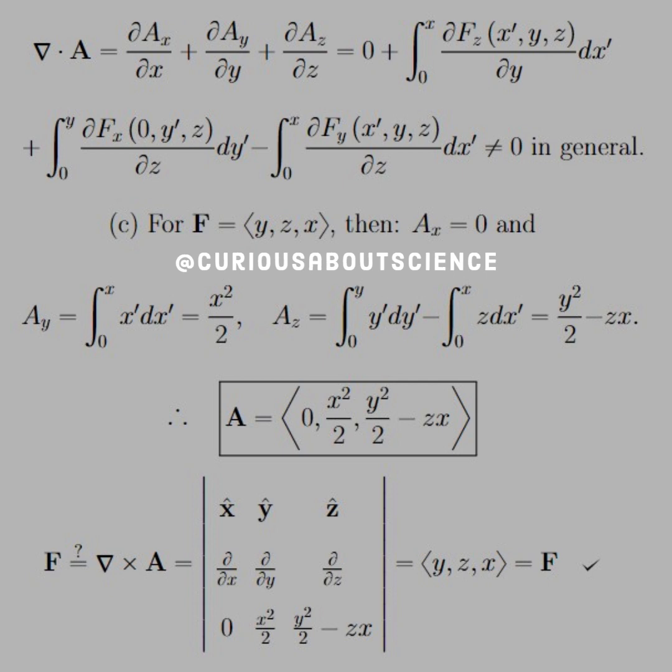Moving on to part C, a solid example. If F equals <y,z,x>, then Ax equals zero would yield Ay equal the integral from zero to x of x' dx', which equals x squared over two. Az would be these two integrals. Evaluating them yields y squared over two minus zx. So putting that in vector form, the vector potential here is <0, x squared over two, y squared over two minus zx>. To check this, take the curl again. We verify that the partials cancel correctly and we are indeed left with the field we started with.